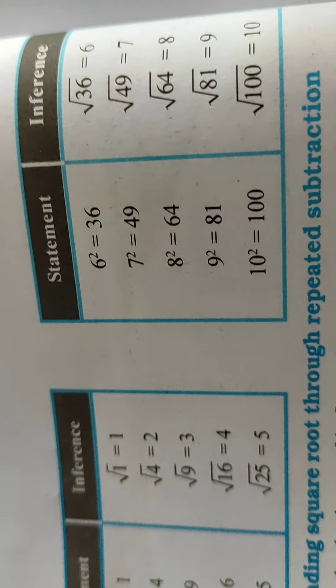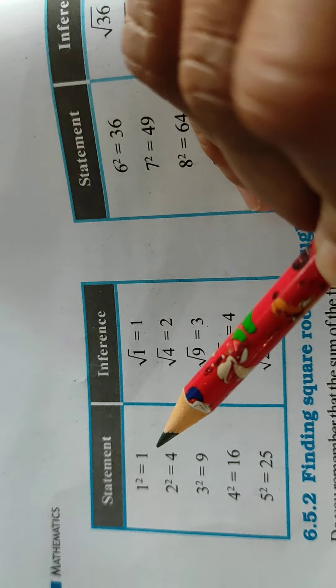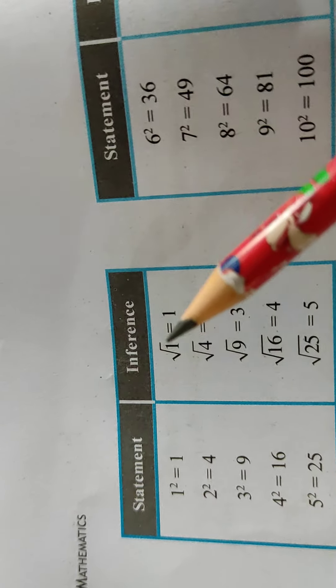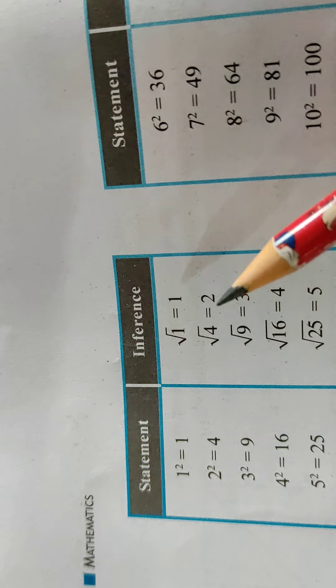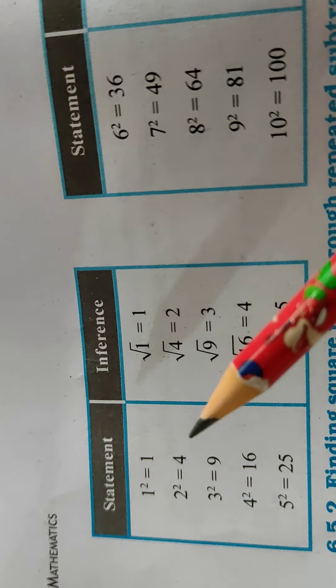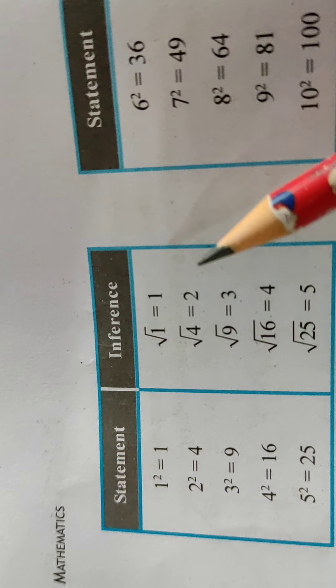Now see, it goes up to number 100. 1 square equals 1, so root 1 is equal to 1, because we are talking only positive numbers. 2 square equals 4, so square root of 4 is 2.